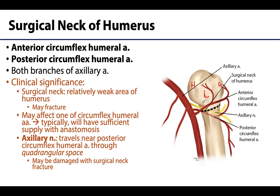Two branches of the axillary artery wrap around the surgical neck of the humerus with very descriptive names: the anterior circumflex humeral, wrapping anteriorly around the surgical neck, and the typically larger posterior circumflex humeral, wrapping around the surgical neck posteriorly. If there is a fracture at the surgical neck, it could affect blood flow through one of these arteries but often not both, and the collateral blood supply may provide sufficient nourishment to the area previously supplied by the anterior or posterior circumflex humeral artery.